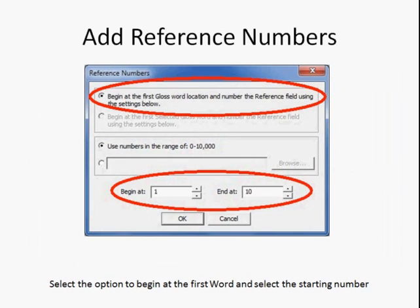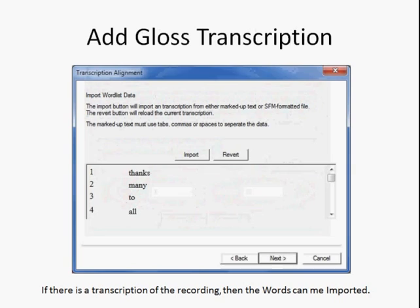Once that's been completed, the reference numbers can be added. They can just be a series of numbers in the range of 10,000. If there happens to be a transcription for the story or sentence, then that can be imported, and by lining up with the reference numbers, the gloss can be applied in a transcription field.